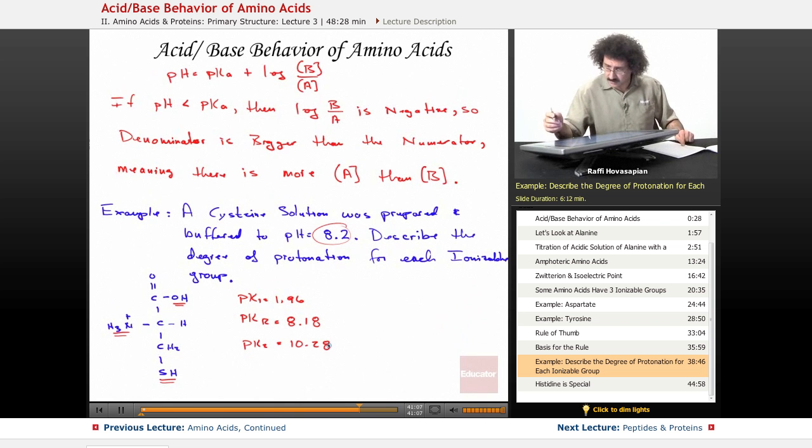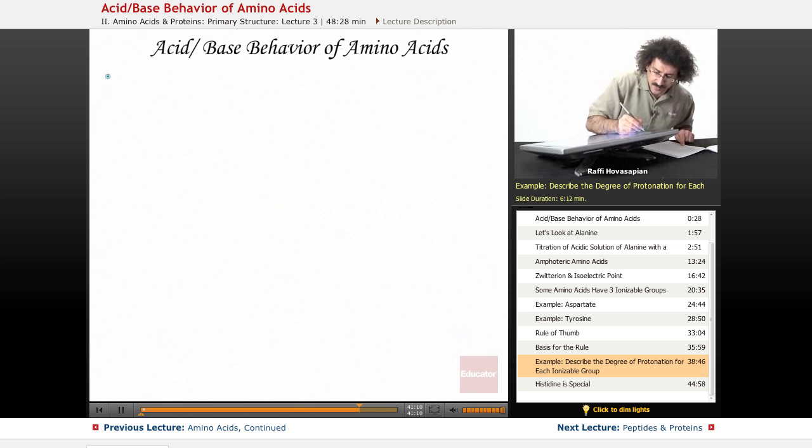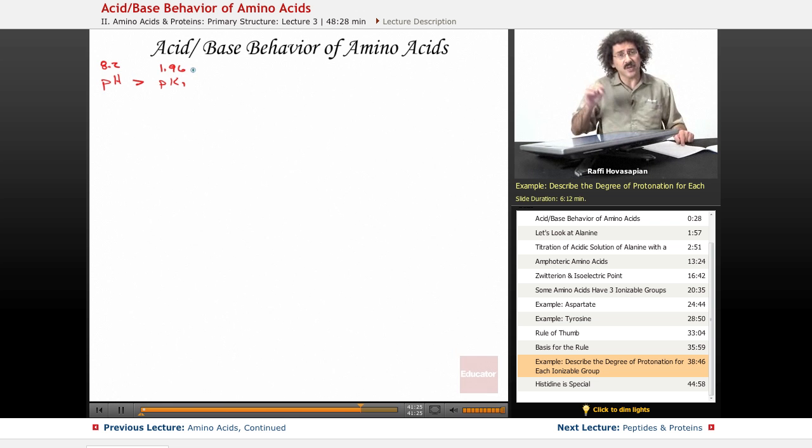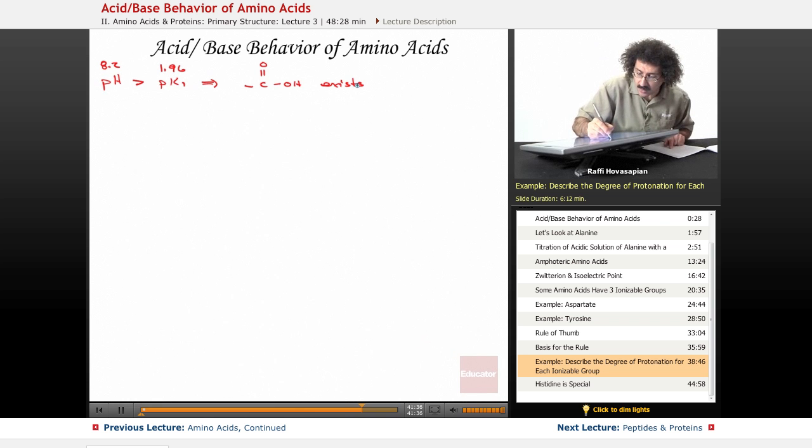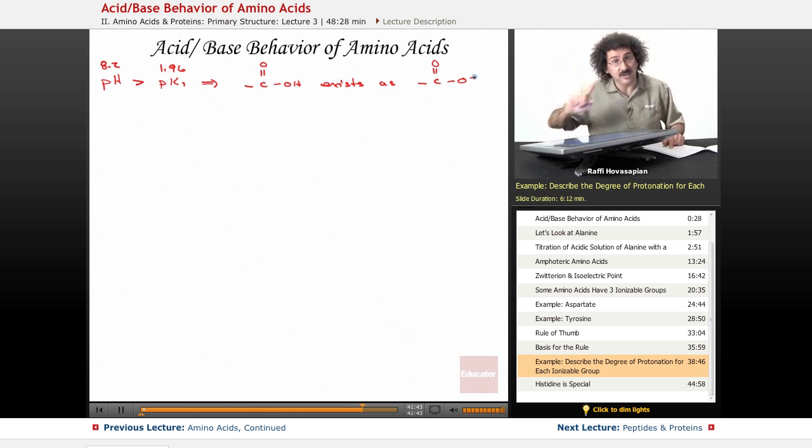Well, now we just use our rule of thumb or reason it out. pH is bigger than pK1, right? pH is 8.2. We said the pH is 8.2, and we said the pK1 was 1.96. Because the pH is bigger than pK1, that implies that the carboxylic acid group exists as a carboxylate group. It's actually been ionized. It has lost its H.